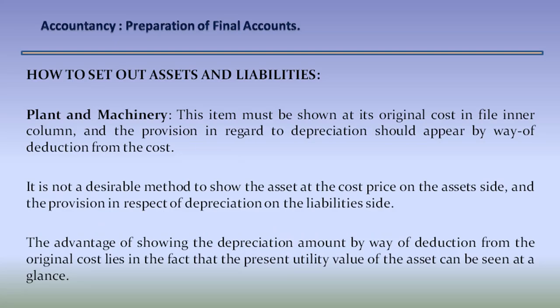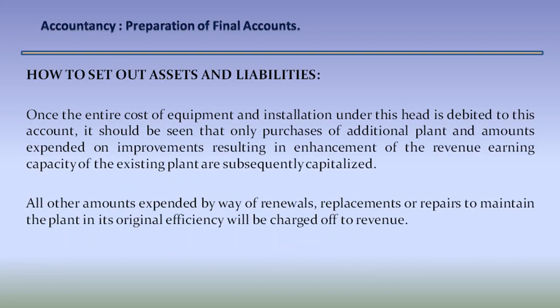Plant and machinery: this item must be shown at its original cost in the inner column, and the provision in regard to depreciation should appear by way of deduction from the cost. It is not a desirable method to show the asset at cost price on the asset side and the provision in respect of depreciation on the liability side. The advantage of showing the depreciation amount by way of deduction from the original cost is that the present utility value of the asset can be seen at a glance. Once the entire cost of equipment and installation is debited to this account, only purchases of additional plant and amounts expended on improvements resulting in enhancement of revenue-earning capacity are subsequently capitalized.